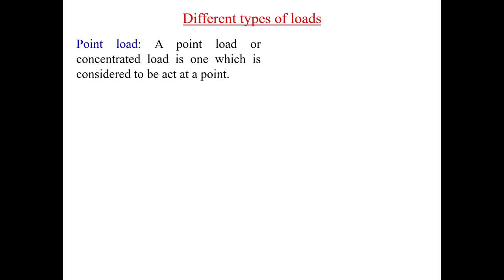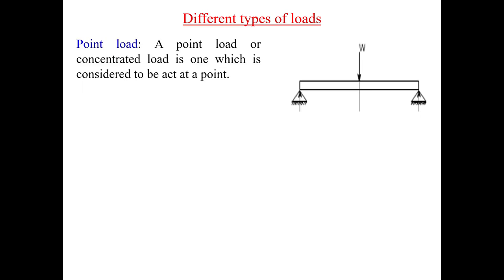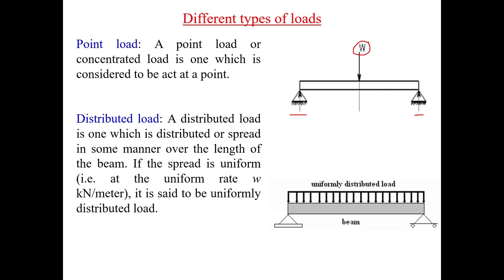Before we proceed further, we need to understand the various types of loads a beam can carry. The general load is a point load, which is applied at a single point. For example, a point load at the center of a simply supported beam with both ends simply supported. Next we have a distributed load — for example, the load distributed over a bridge or a roof structure. That distribution may be uniform, uniformly varying, or a random distribution. Generally we assume loads are uniformly distributed or uniformly varying. If the load is uniformly distributed, we can represent it as a uniform intensity along the span.